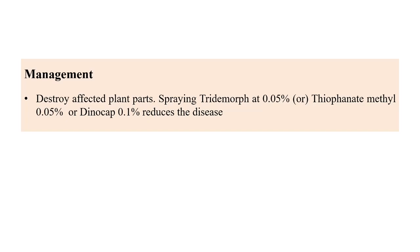Tridimorf and dinocap are especially recommended for almost all powdery mildews. Sulfur-related fungicides cannot be recommended for cucurbit crops because sulfur can absorb the water content present in the fruits. Since cucurbit crops like watermelon and muskmelon contain 95 to 98 percent water, applying sulfur causes the fruit to appear shrunken or desiccated, preventing it from fetching a good market price.